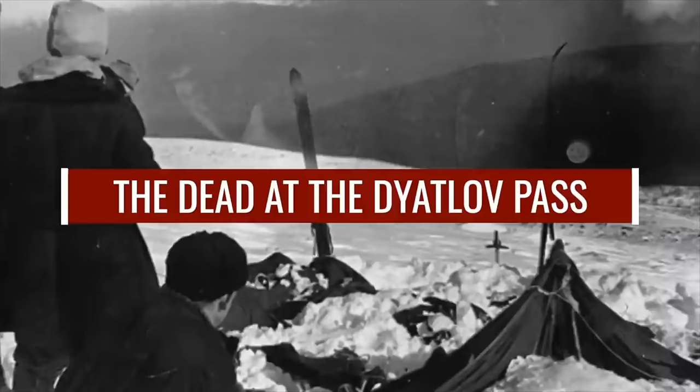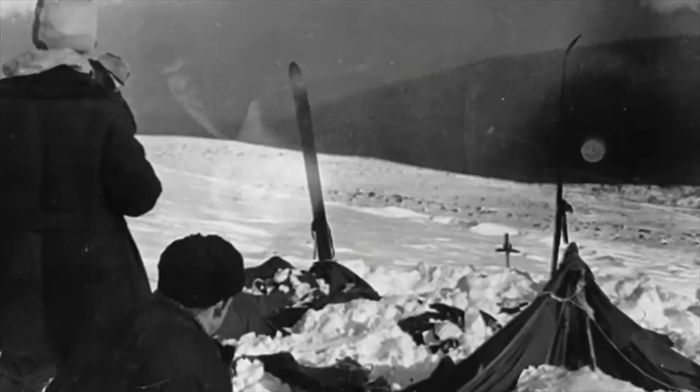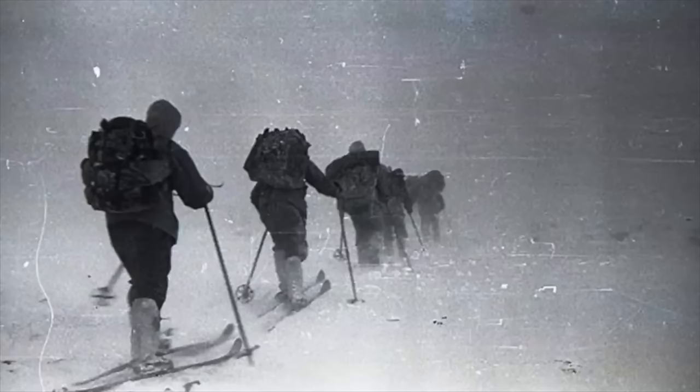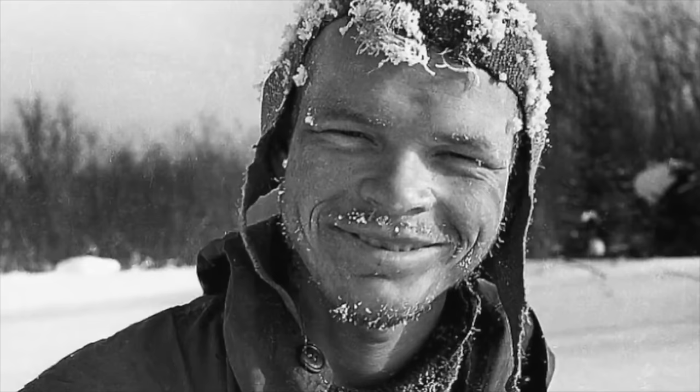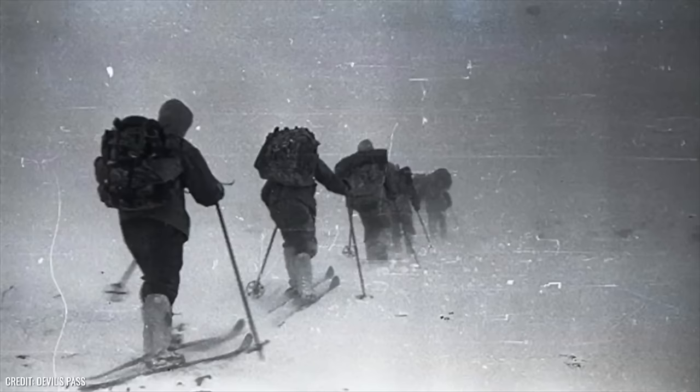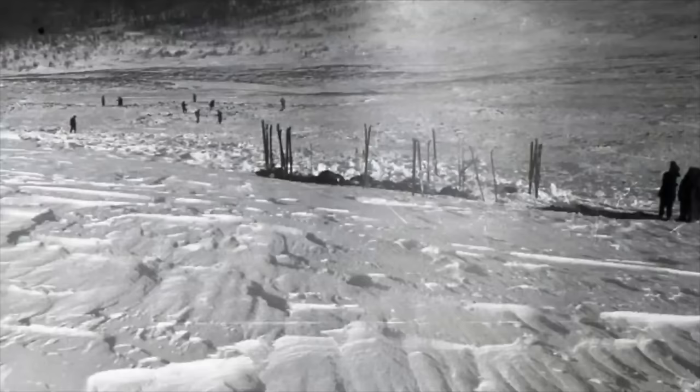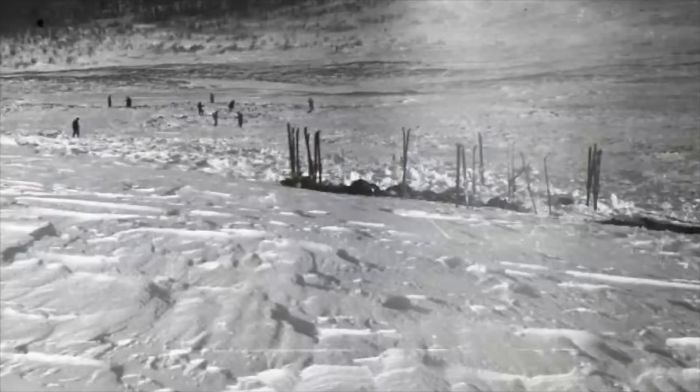The dead and the Dyatlov Pass: in 1959, a horrific accident occurred in the former Soviet Union that still raises many questions today. North in the Ural Mountains, a group of nine tourists set out on an unforgettable expedition. Their guide was the experienced student and hiker Igor Dyatlov, after whom the pass was later named. The young people were all aged between 21 and 38. The last known sign of life was from January 28, 1959. What exactly happened after that is a mystery.